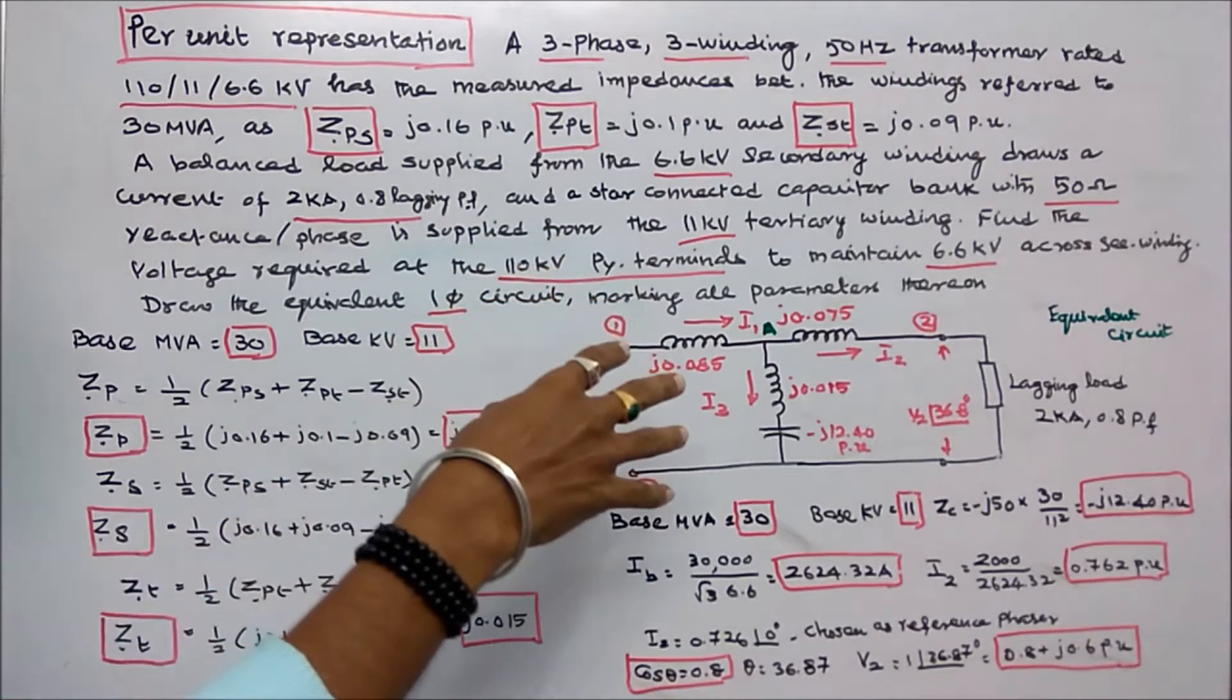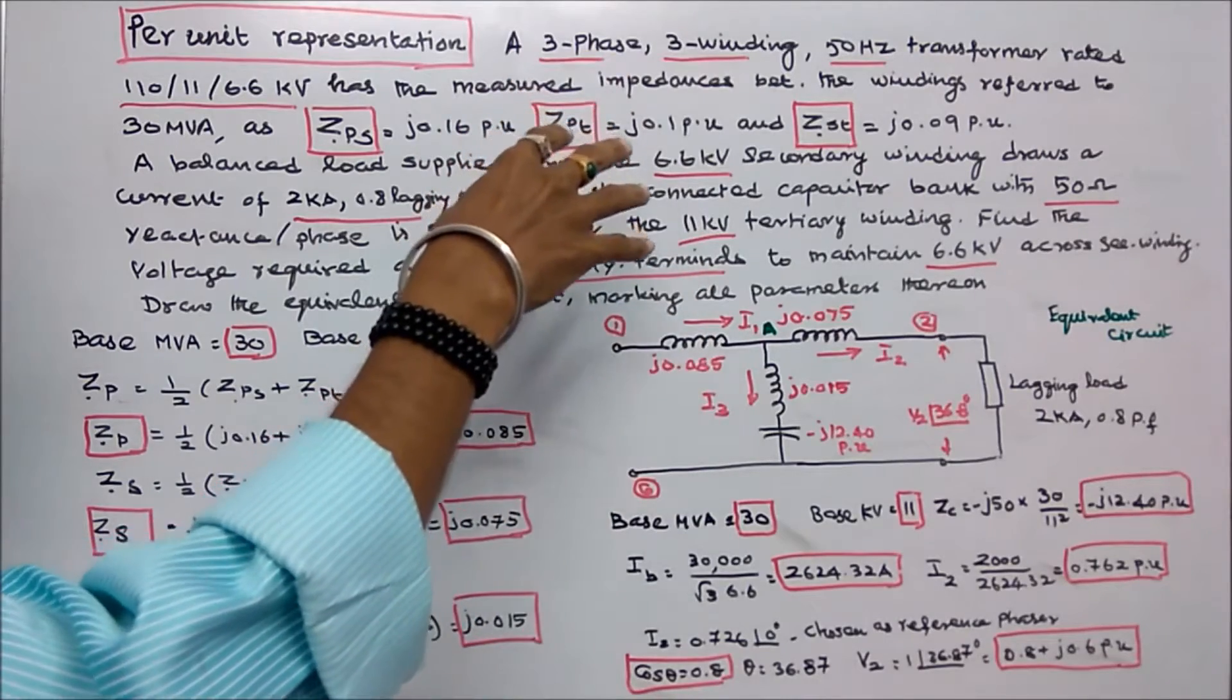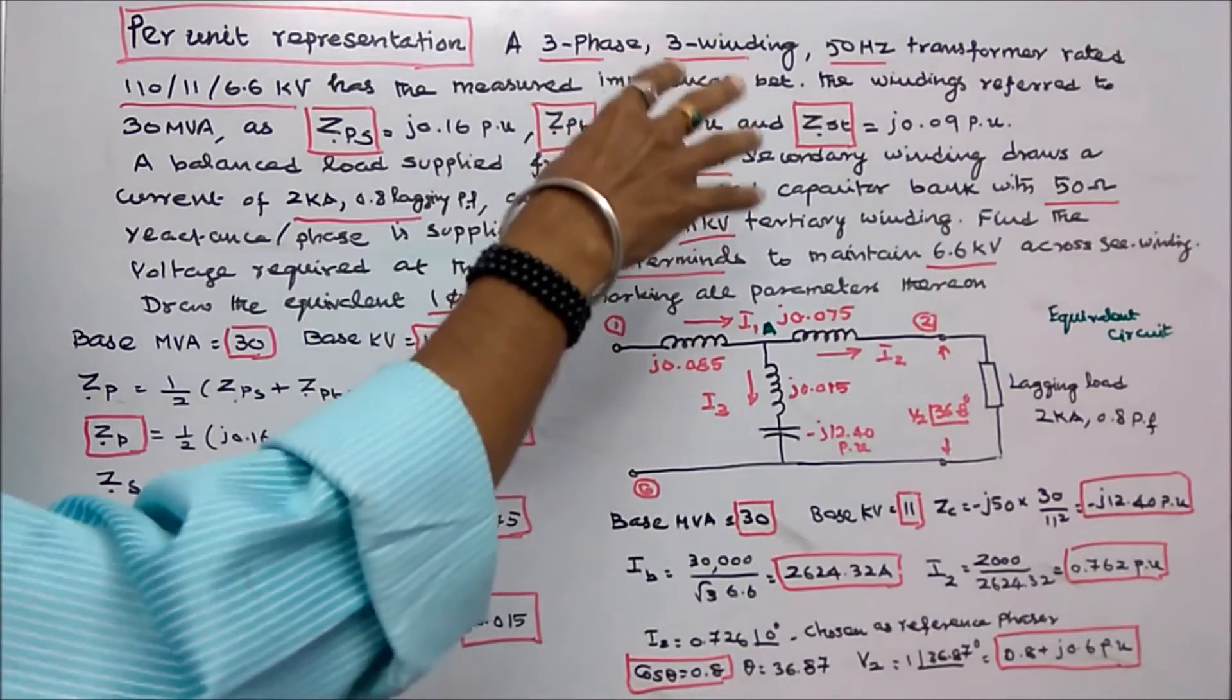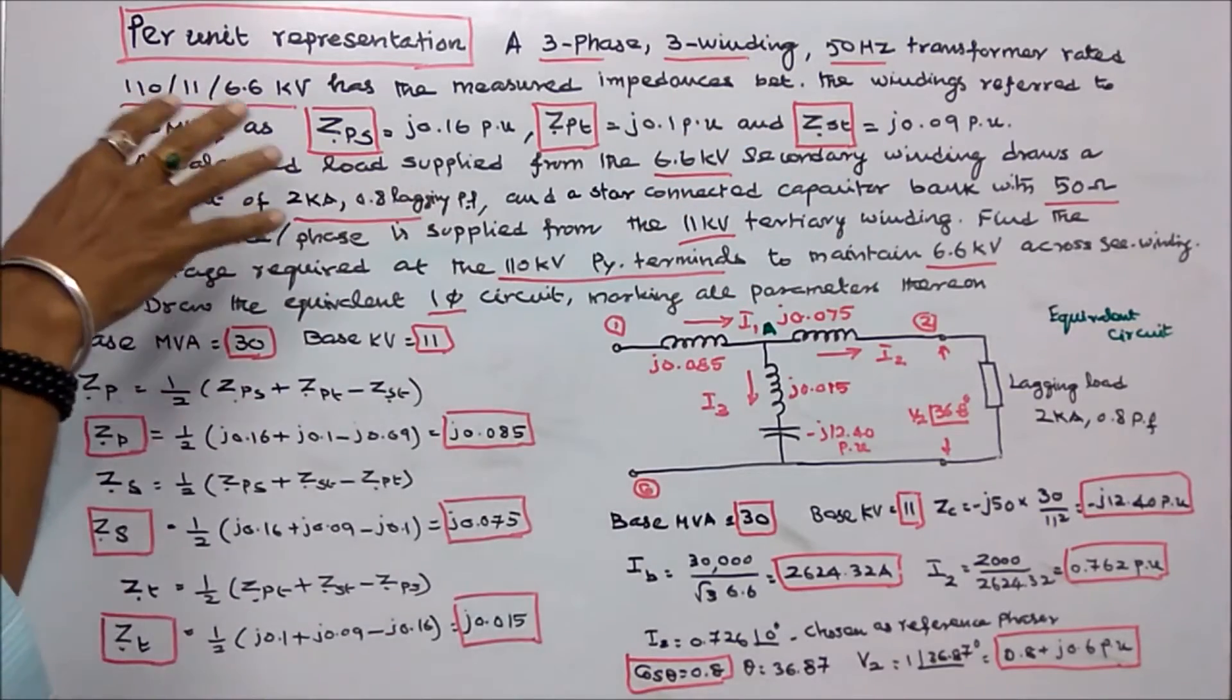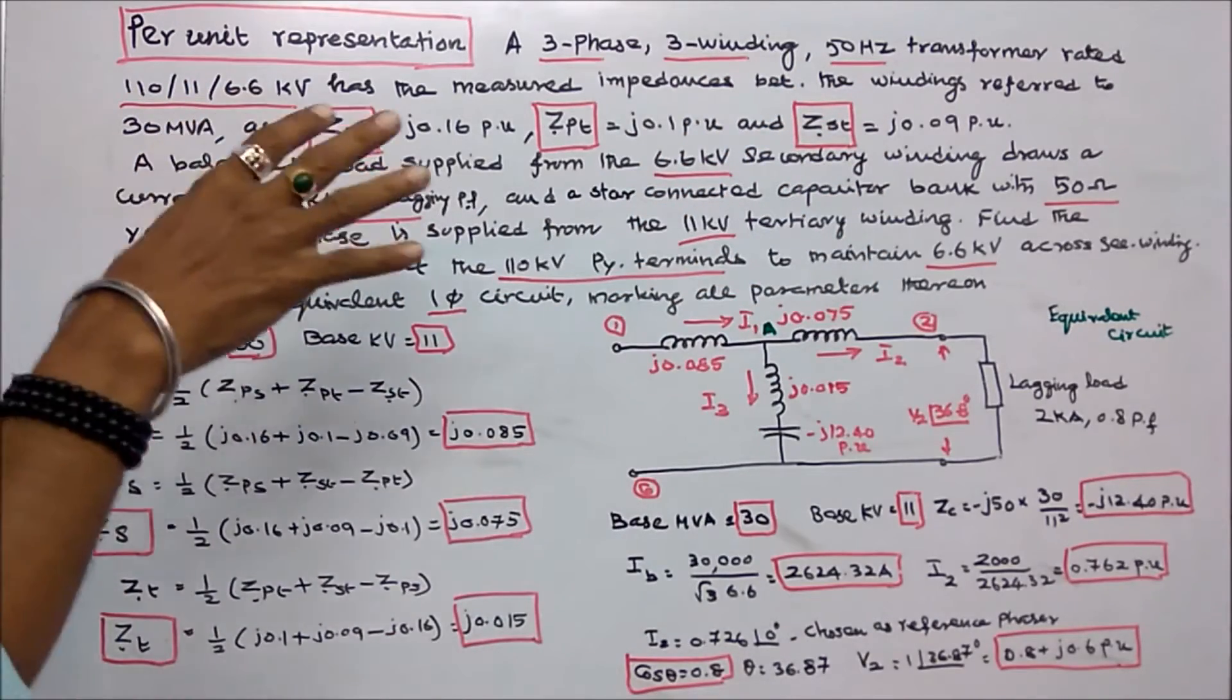In this class we'll work out one problem. A 3-phase, 3-winding, 50 Hz transformer rated 110 bar, 11 bar, 6.6 KV.